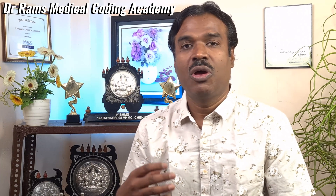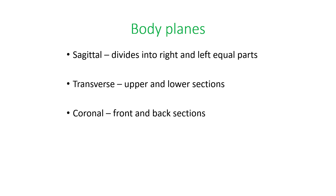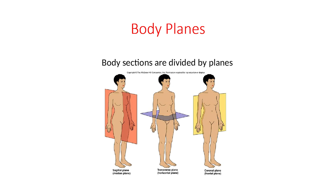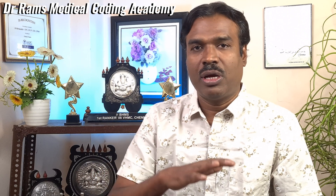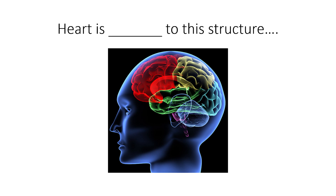Next we move on to body planes. There are three different planes. Just as the body has bilateral symmetry, the sagittal plane divides the body into equal right and left halves — the word sagittus literally means arrow, as if an arrow divides the body. The transverse plane divides the body into upper and lower halves. The coronal plane shows the frontal and back sections of the body.